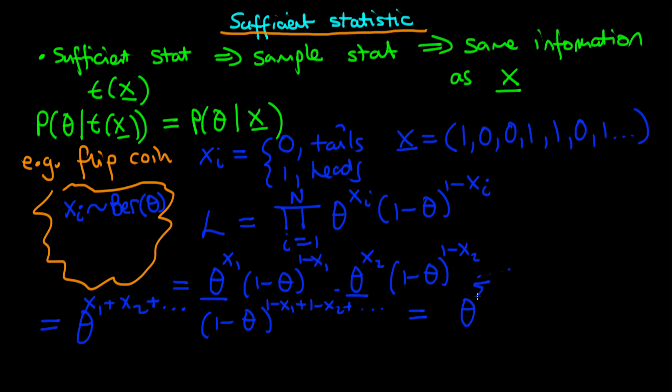Plus 1 minus x3 all the way up to 1 minus xn. So we can rewrite this just as theta to the power the sum from i equals 1 to n of xi times 1 minus theta to the power n minus the sum from i equals 1 to n of xi.